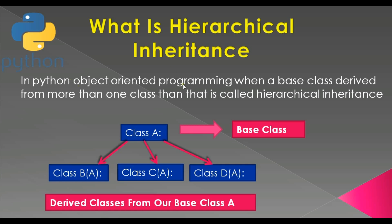For example, here we have a class A and also three more classes: class B, class C, and class D. Class B inherits from class A, class C also inherits from class A, and class D also inherits from class A. This kind of inheritance is called hierarchical inheritance. Between the derived classes B, C, and D there is no relationship, but there is a relationship between class A and class B, class A and class C, and class A and class D.